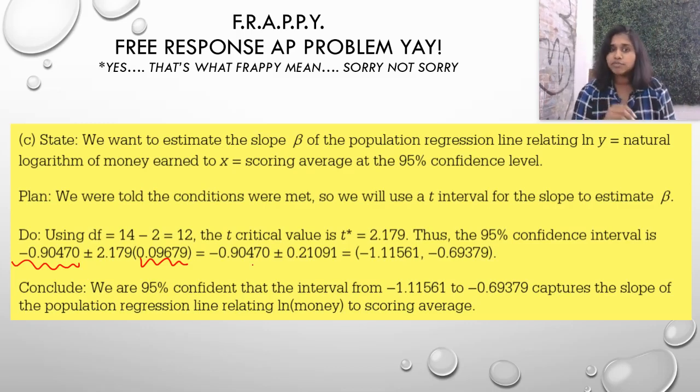So, that's where I got my two numbers from. Plugged it in. Now, I have an interval. We are 95% confident that the interval from blah to blah captures the slope of the population regression line relating the natural log of money to score average, not relating money to scoring average. We couldn't do that, could we? We proved that in question A.